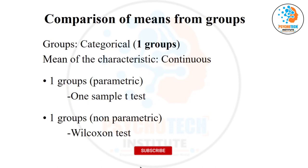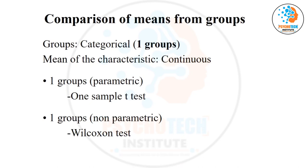Whenever you have a group of people, there is always some difference between two groups — that is natural. But we want to identify whether that difference is by chance or whether it is real.